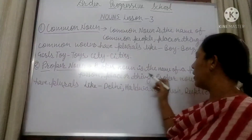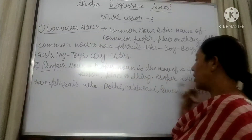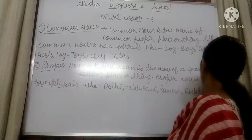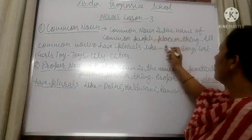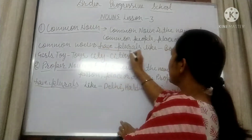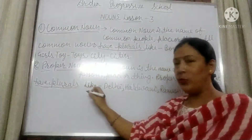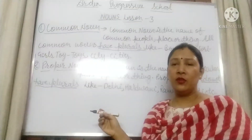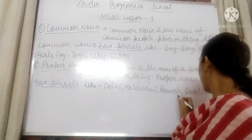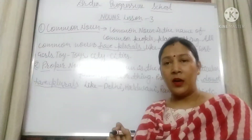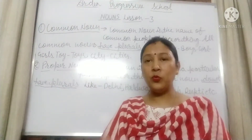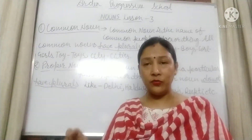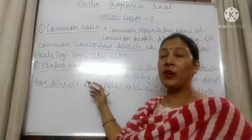Proper noun is the name of a particular person, place or thing. Proper nouns do not have plurals — this is the difference between proper and common noun. Like Delhi — we can't say Delhis; we have only one Delhi, only one Haldwani. Ramesh, Deepti, etc. If your dog's name is Bruno, then Bruno is a proper noun because it's the name of a particular thing — your dog.